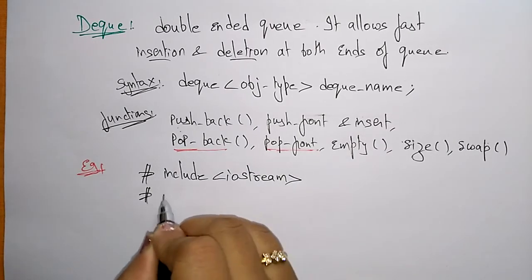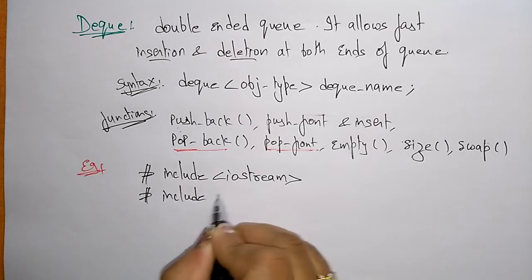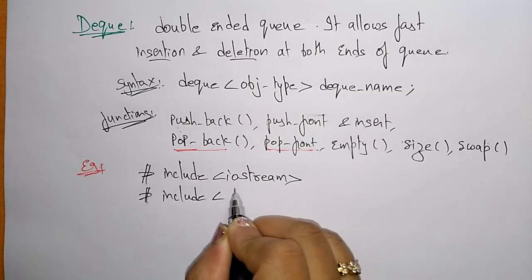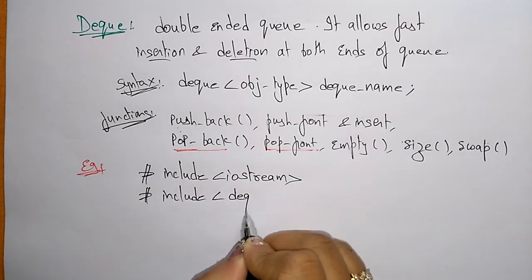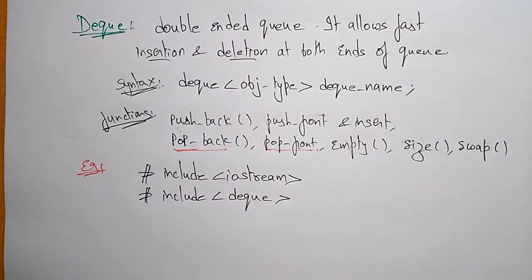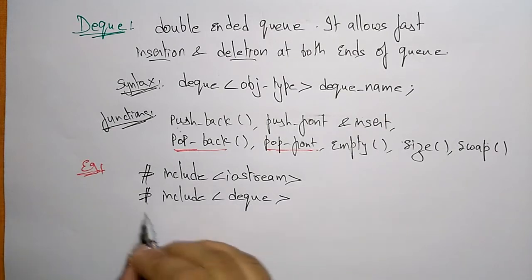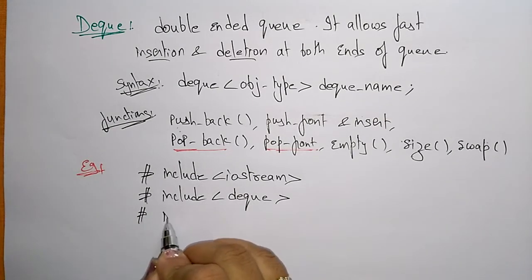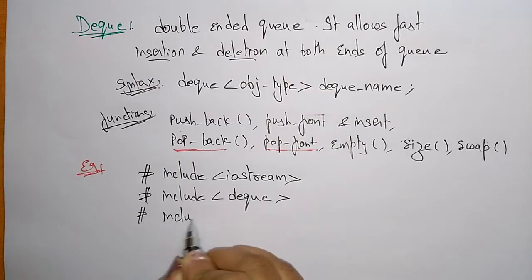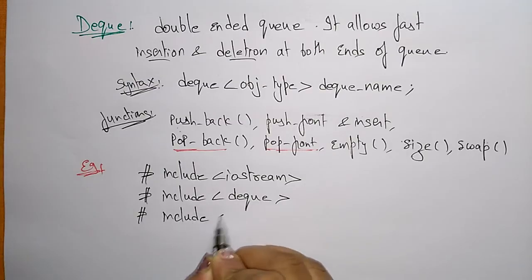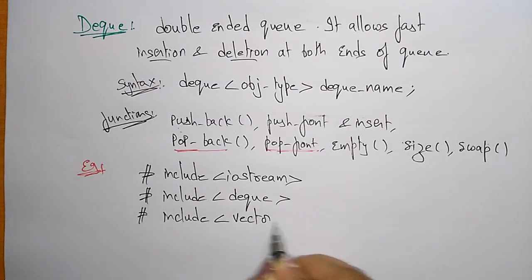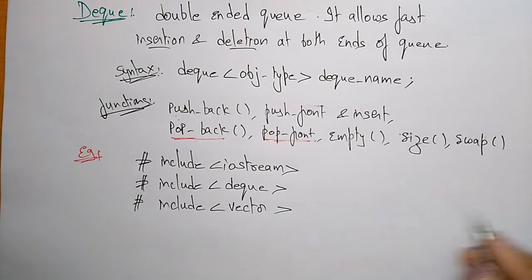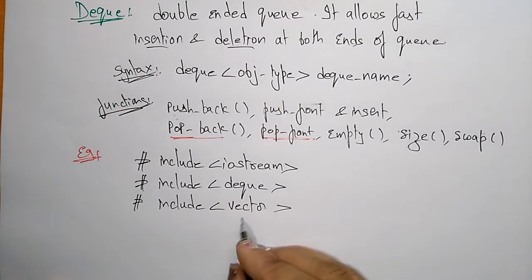Now let's write the program. We include the iostream header, and we also need to include the deque container from the library. Along with that, you can also include vector since we're using array concepts.